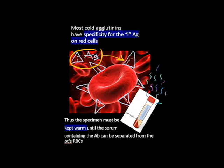Proper handling requires the blood to be collected in tubes kept warm from the moment of collection until the physical separation of the serum from the cells. If the specimen is allowed to cool, the antibody may attach to the I antigens, causing a falsely decreased titer. Should this happen, the sample must be placed in a 37 degrees Celsius incubator for 30 minutes before removing the serum for testing. The incubation at 37 degrees Celsius will cause the cold agglutinin to dissociate from the patient's cells.